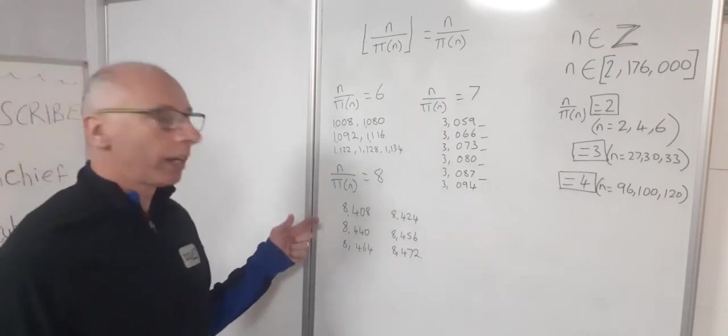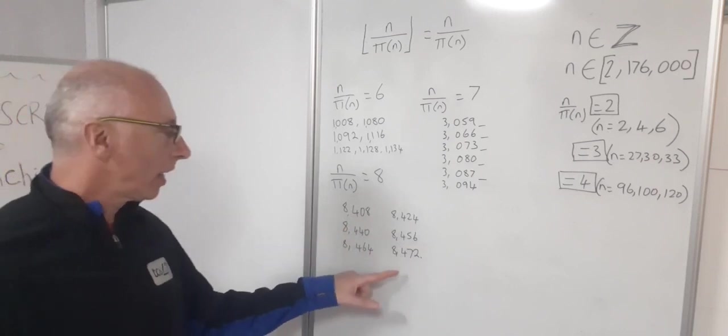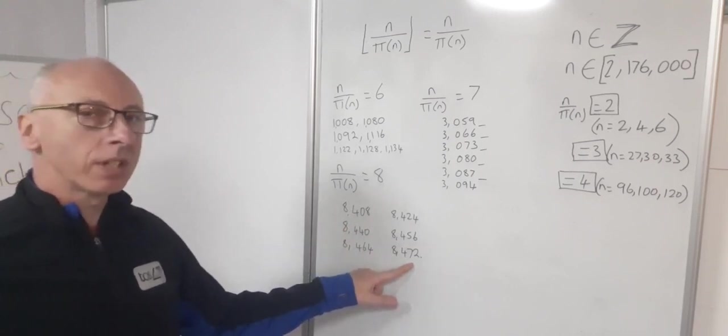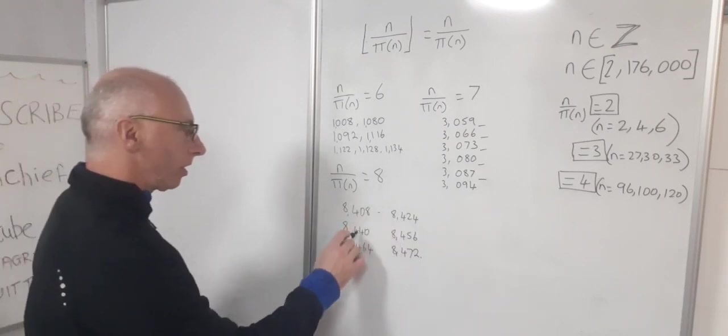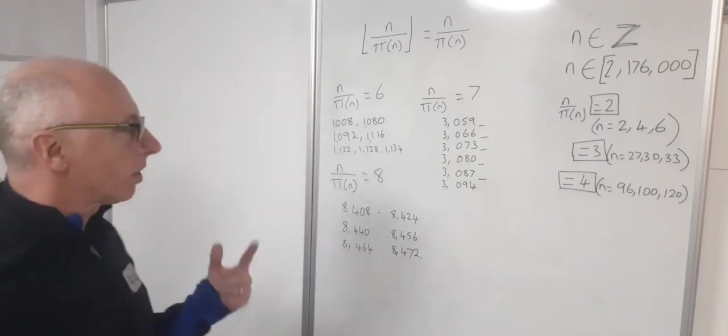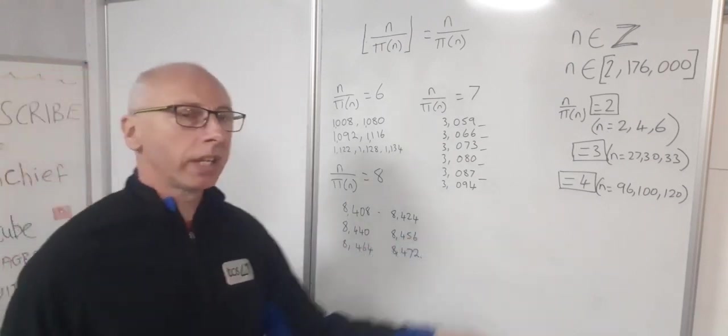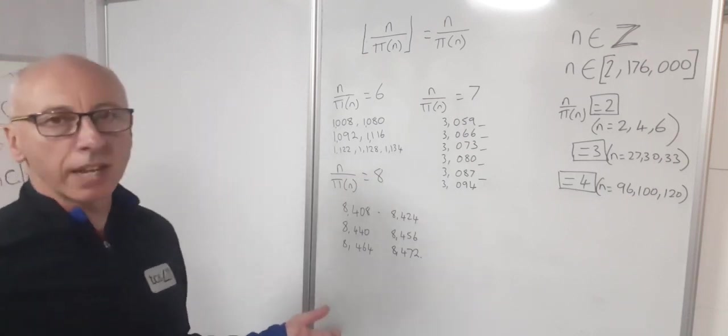we jump up even higher again to 8408, all in multiples of 8, all the way up to 8472. And sometimes there's gaps here, there's 16 gap here, 16 gap here, 16 gap here, only 8 here and only 8 here. Okay, so I'm going to take this off the board, write this over here, and then I'll show you something interesting that happened with when we tried to get 9.